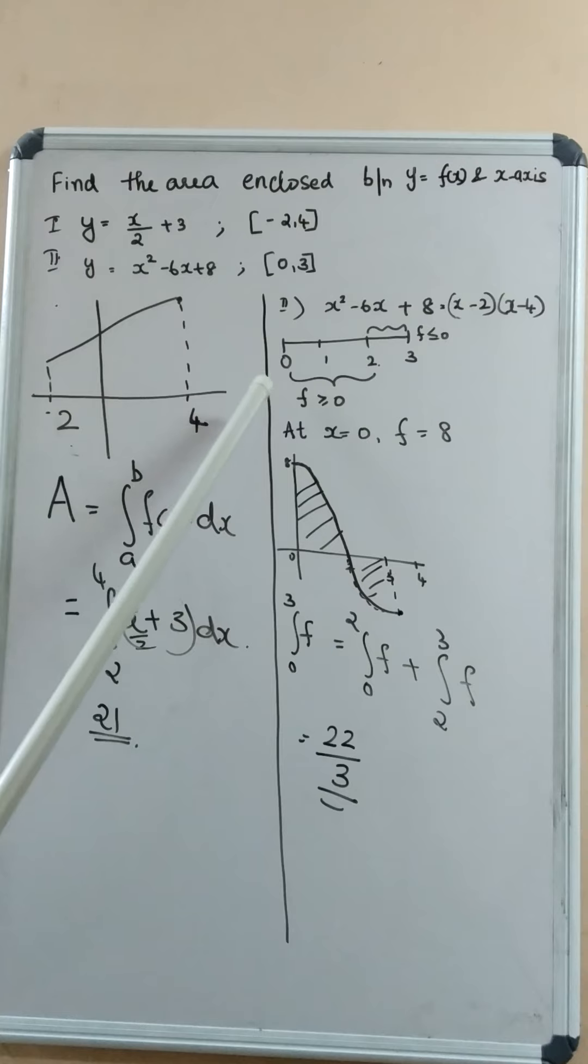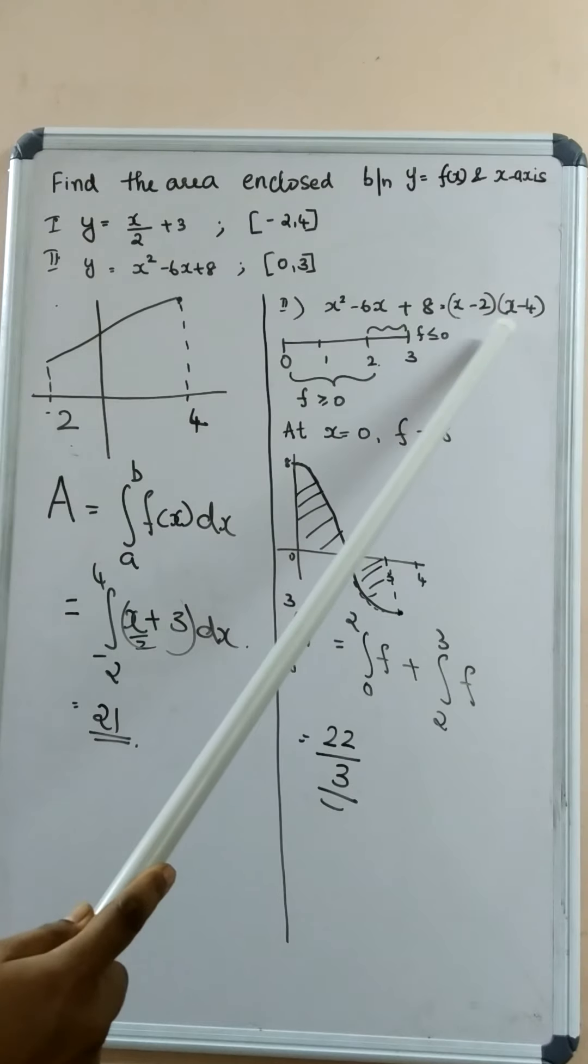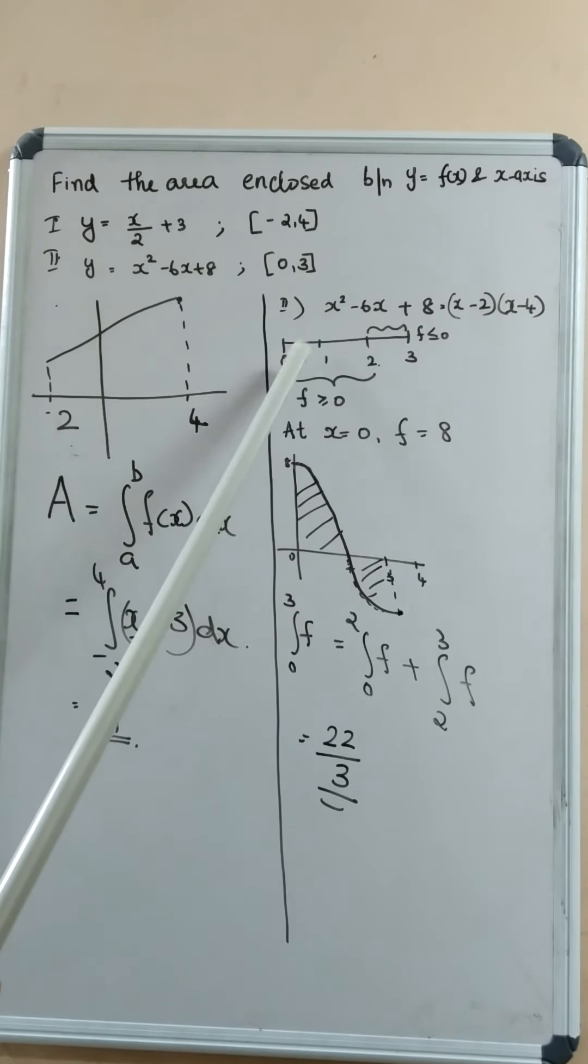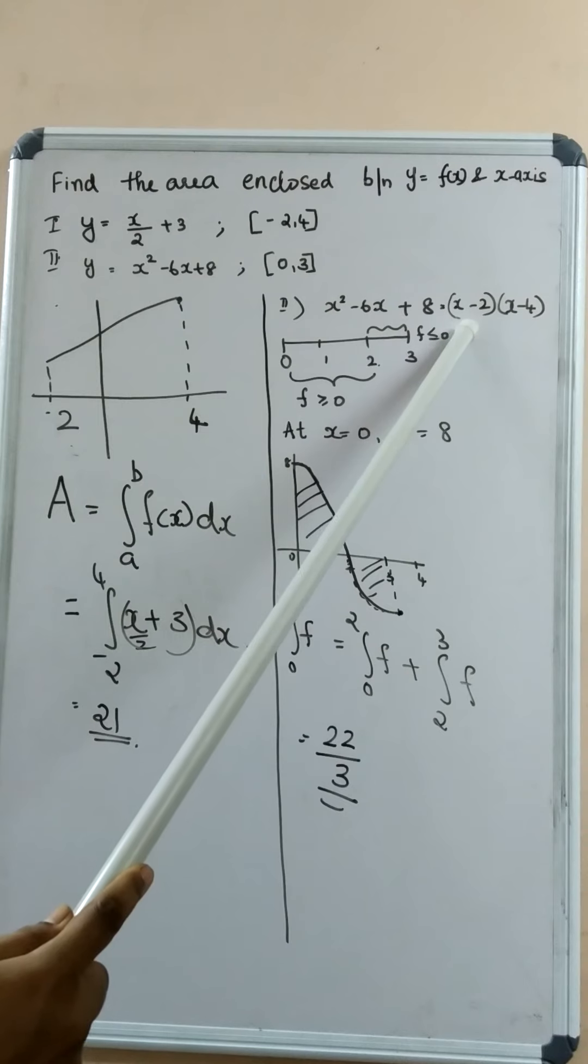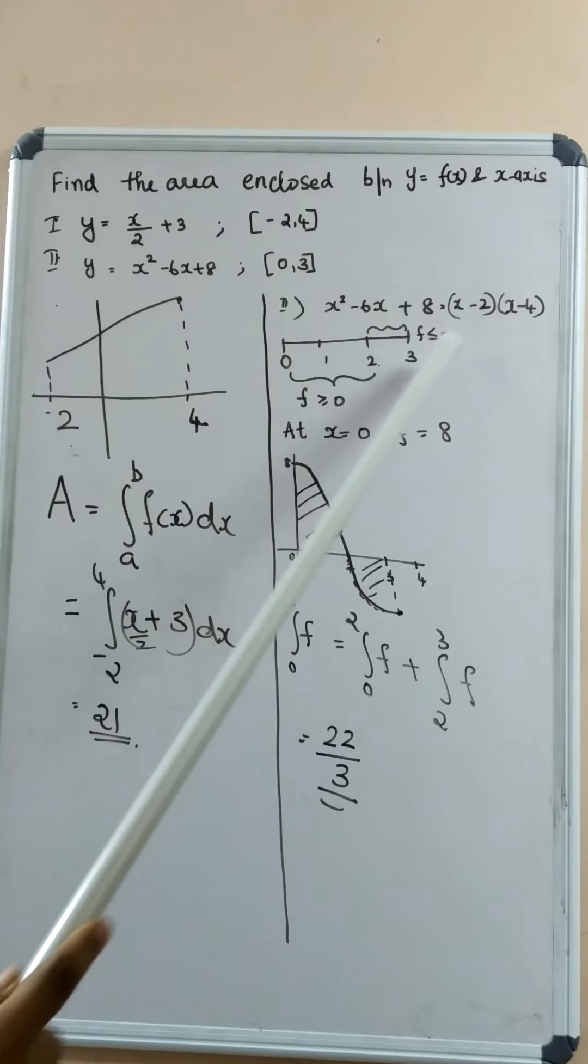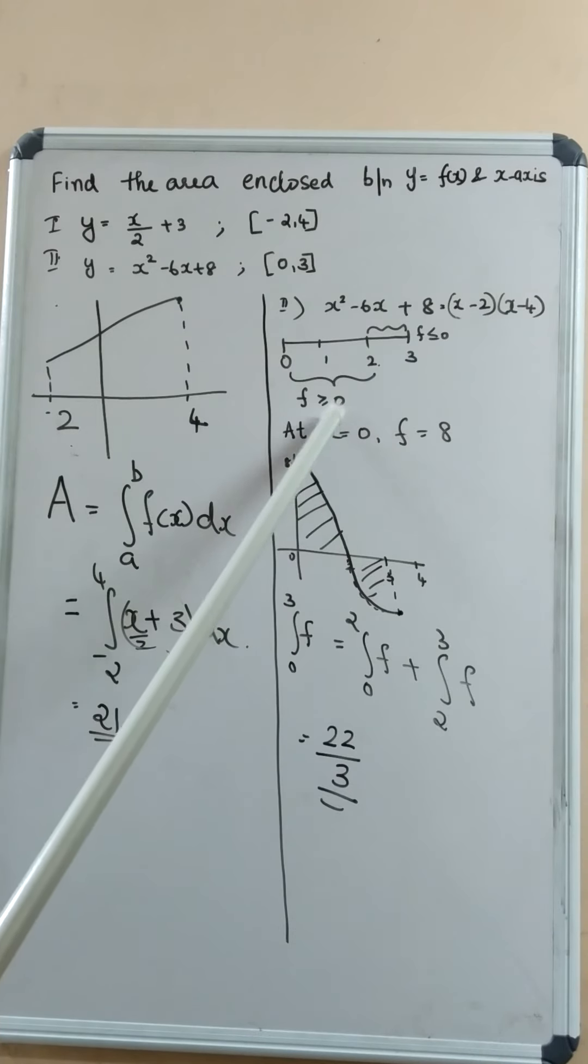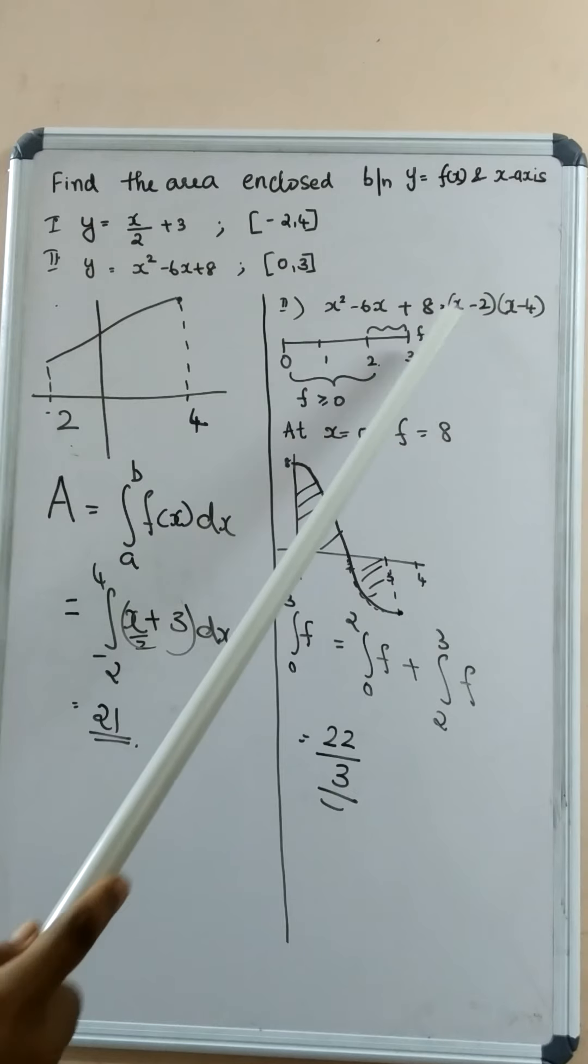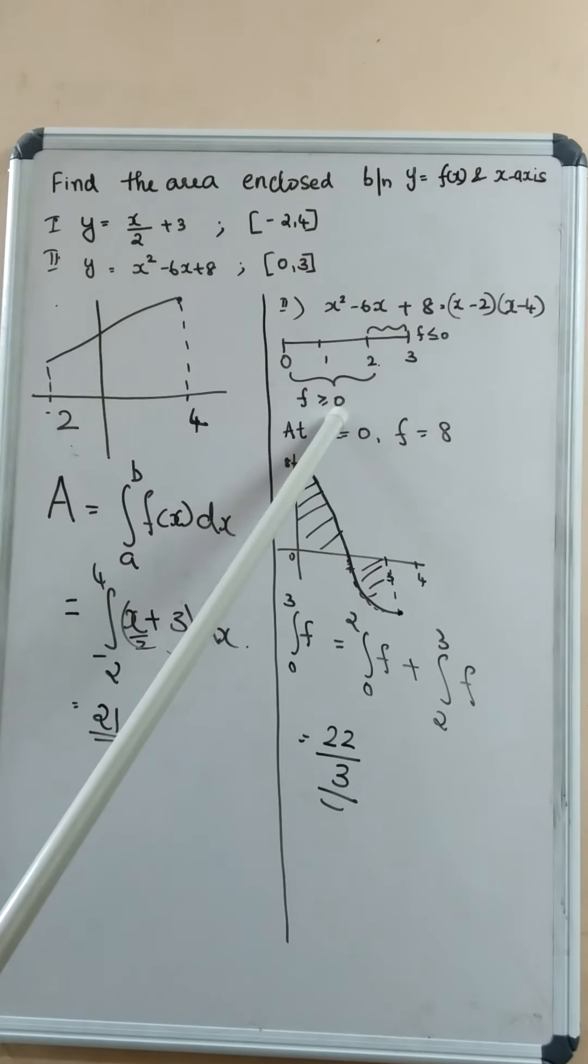So, the function is x minus 2 times x minus 4. From 0 to 2, both factors are negative, so the product of two negative terms is always positive. Therefore from 0 to 2 x minus 2 into x minus 4 is positive or it is non-negative. Therefore, the function is a positive function, the function lies above the x axis.